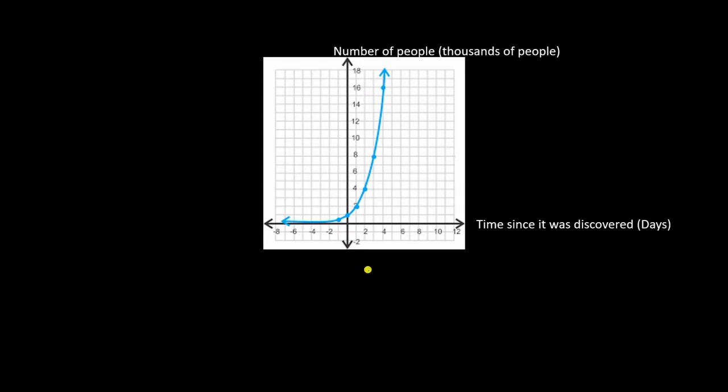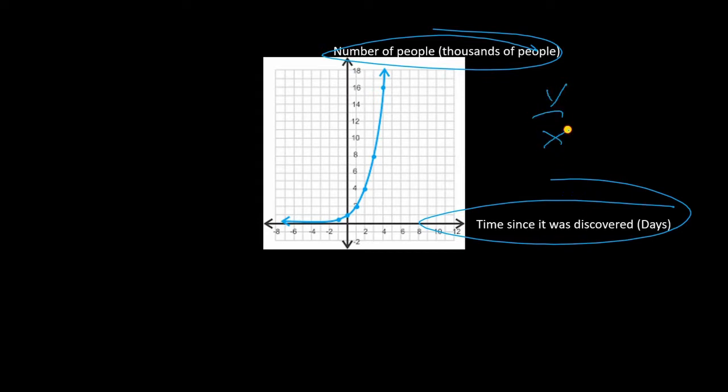Well, that clearly depends on the units for the axes. In this graph for example, we are looking at the progression of a virus with thousands of people on the y-axis and time on the x-axis. The units for the derivative will be the units for the y-axis divided by the units on the x-axis. Here, it will be thousands of people per day.